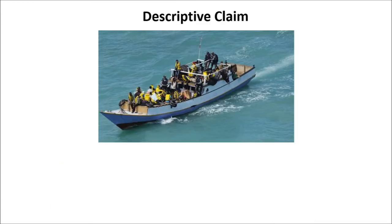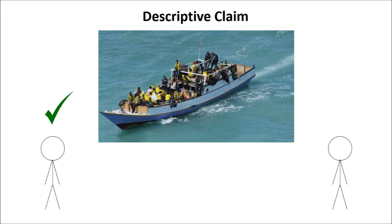One example of this in Australia is people arriving by boat being put in detention centers. People look at that and say people are trying to come to Australia illegally — that's the descriptive 'is' claim — and then there are two different normative reactions: one is we ought to let them in, and one is we ought to turn them away. This demonstrates the inherent subjectivity of the naturalistic fallacy.